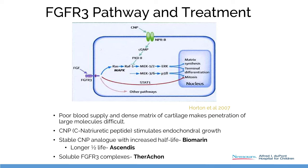Here's what several companies have done. Biomarin has created a CNP with a longer half-life — it's a daily injection. Ascendus is right behind them, still working on animal models with a longer-acting CNP, so you can get an injection once a week.